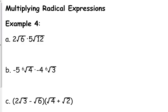When you are multiplying radical expressions, you multiply the coefficients in front. So we're going to multiply 2 times 5 to give us 10. Since those are both under a square root, we are going to multiply the numbers under the square root. So 6 times 12 is 72.